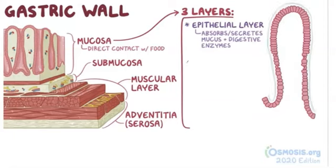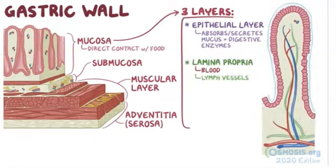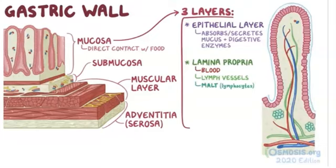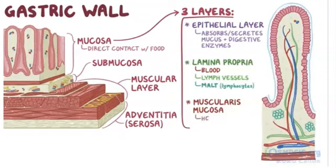and it absorbs and secretes mucus and digestive enzymes. The middle layer is the lamina propria, and it has blood, lymph vessels, and mucosa-associated lymphoid tissue, or MALT for short, which are nodules of immune cells called lymphocytes, in charge of eliminating pathogens that could pass through the epithelial layer. The outermost layer of the mucosa is the muscularis mucosa, and it's a smooth muscle layer that contracts and helps with the breakdown of food.